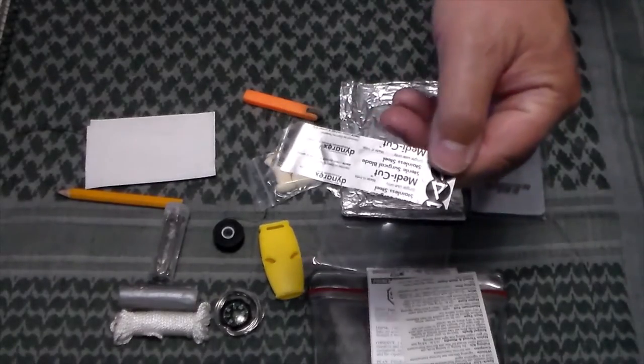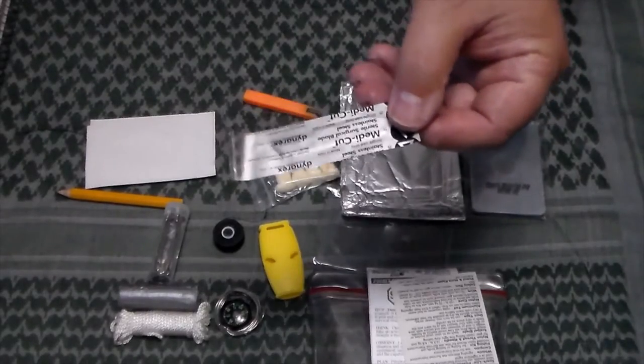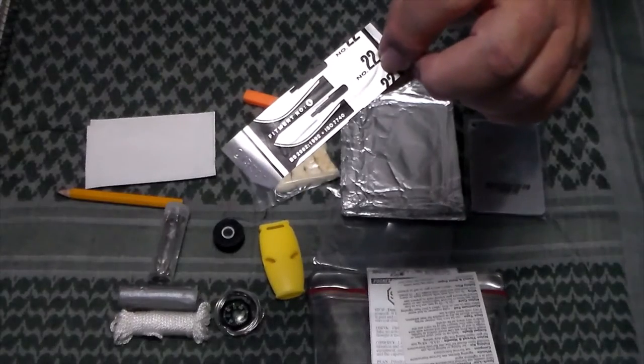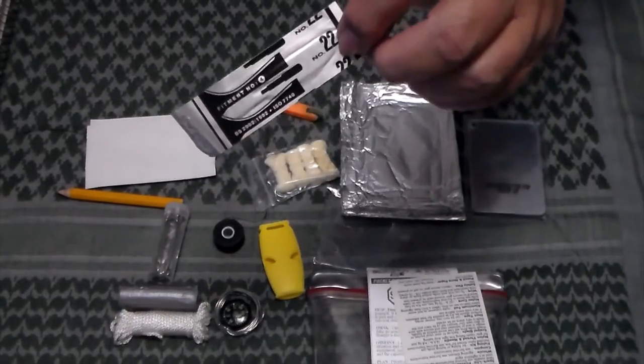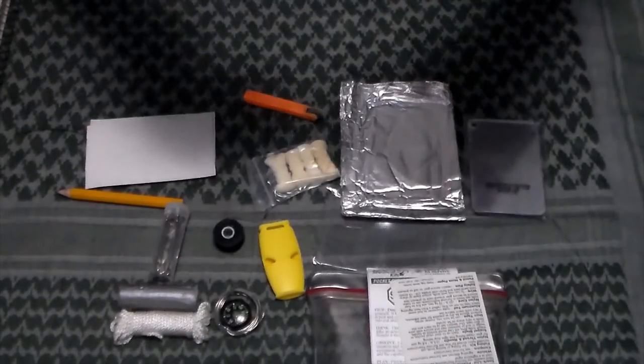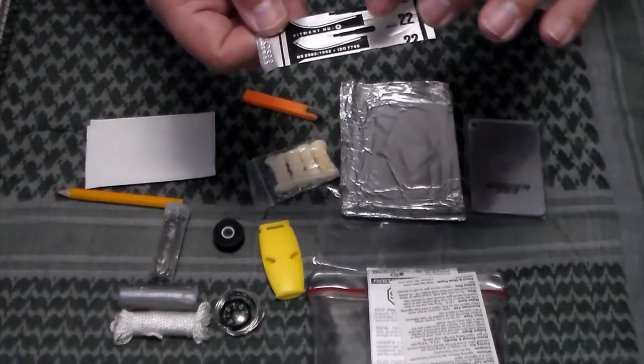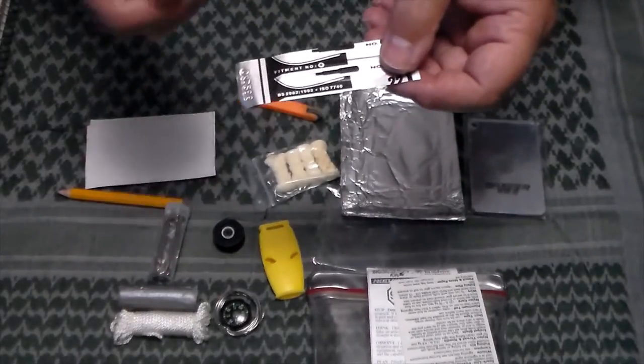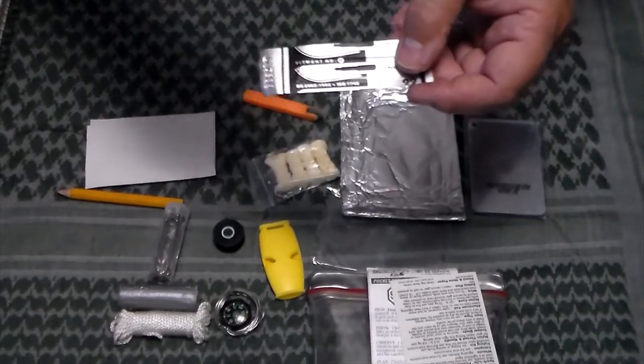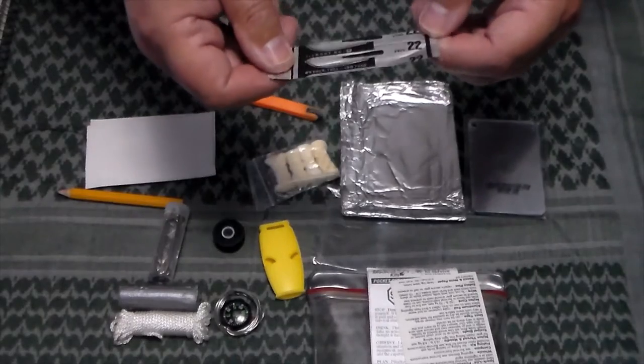And then it comes with a scalpel blade, also. I'm not a big fan of razor blades and scalpel blades in survival kits, mainly because they're very fragile. But this one is shaped to where you could take a piece of wood, if you've got it split, put it in there, lash around there, and then you have a handle for your scalpel blade.